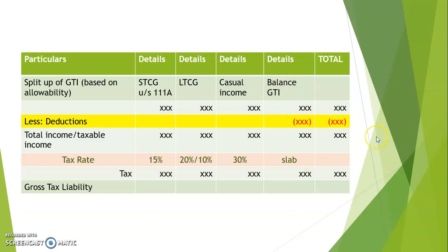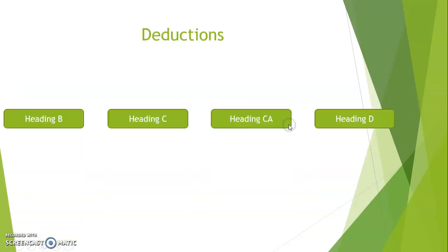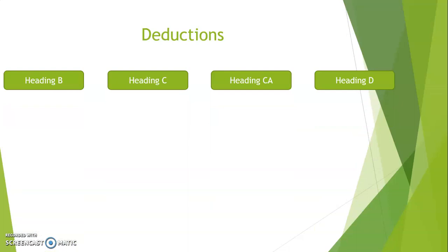The whole deductions chapter — Chapter 6A — is divided into multiple headings: Heading A, B, C, CA, and D. Heading A contains certain introductory and general points about the whole chapter — nothing much, just general stuff. Headings A, AA, and AB also include certain general points. But headings B, C, CA, and D include all the deductions. Each of these headings deals with deductions of a certain kind.